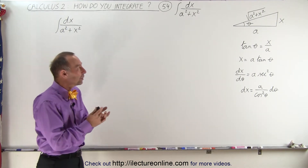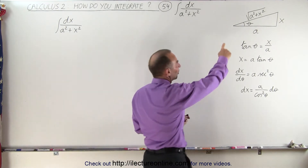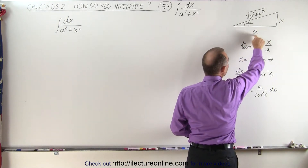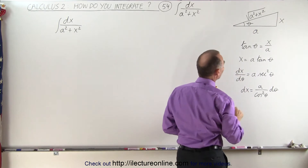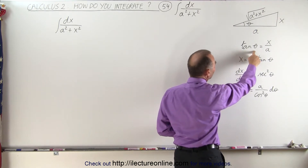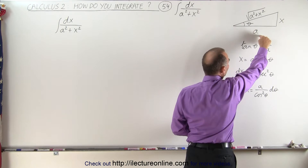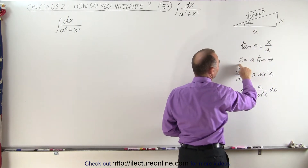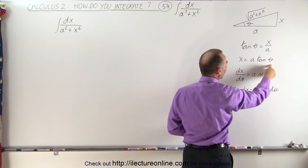So how do we deal with it? Well, we use the following trick substitution. Here's our triangle. We have the side a, the side x, and the hypotenuse. We can then see that the tangent of theta, the angle theta here, is equal to the opposite side over the adjacent side. We saw that for x, we get a tangent of theta.